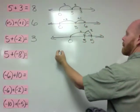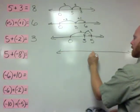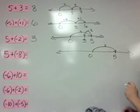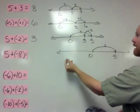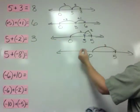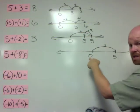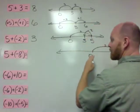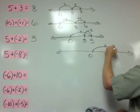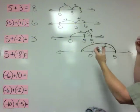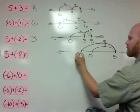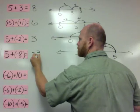So 5 plus negative 8. Draw our number line, here's our 0. Positive 5 means hop to the right 5, and that puts us at 5. Then this negative 8 means we're going to hop to the left 8, which means we're going to cross over 0 because the absolute value of negative 8 is 8, and 8 is greater than 5. So that's going to push us all the way into the negative side. Hop to the left 8 — that's going to put us at negative 3.